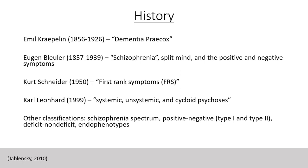Kurt Schneider claimed that nine groups of psychotic manifestations, designated as first rank symptoms, had a decisive weight in the diagnosis of schizophrenia. These include: audible thoughts, voices arguing about or discussing the patient, voices commenting on the patient's actions, experiences of influences on the body, thought withdrawal and other interference with thought, thought broadcast or diffusion of thought, delusional perception, and other experiences involving "made" impulses and feelings experienced as caused by an outside agency. This ultimately contributed to some of the basis of the DSM and ICD-10 criteria for the diagnosis of schizophrenia.